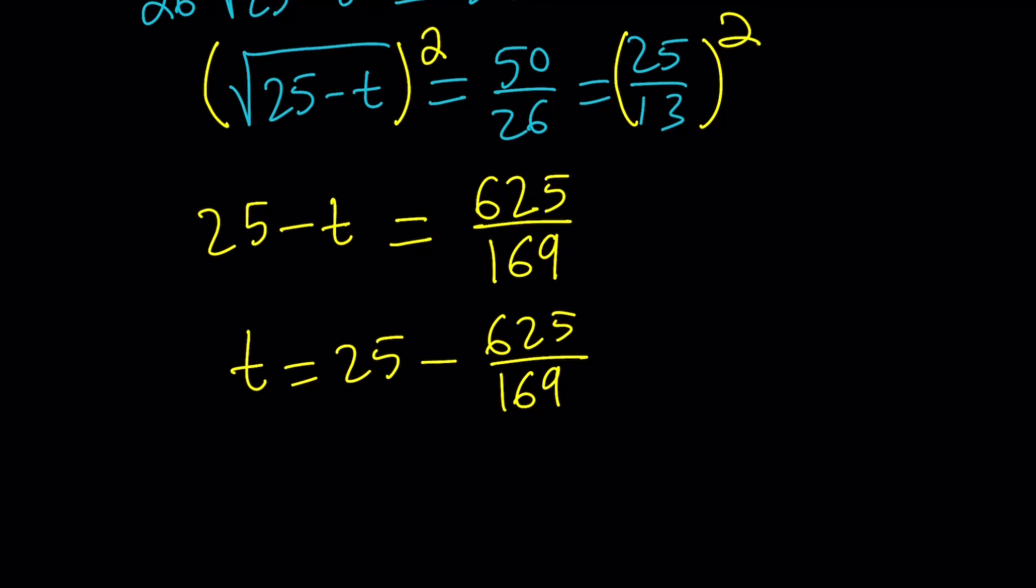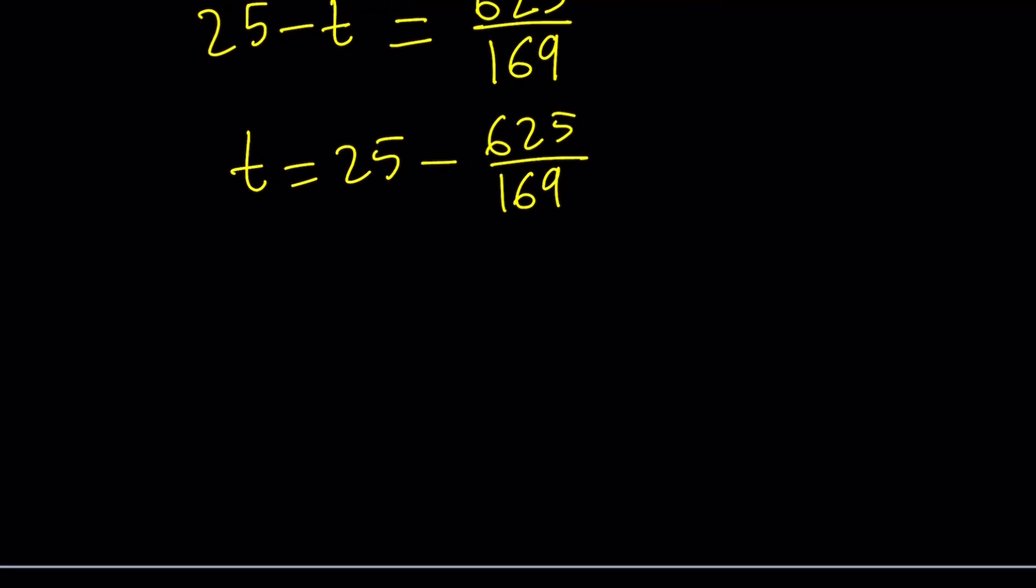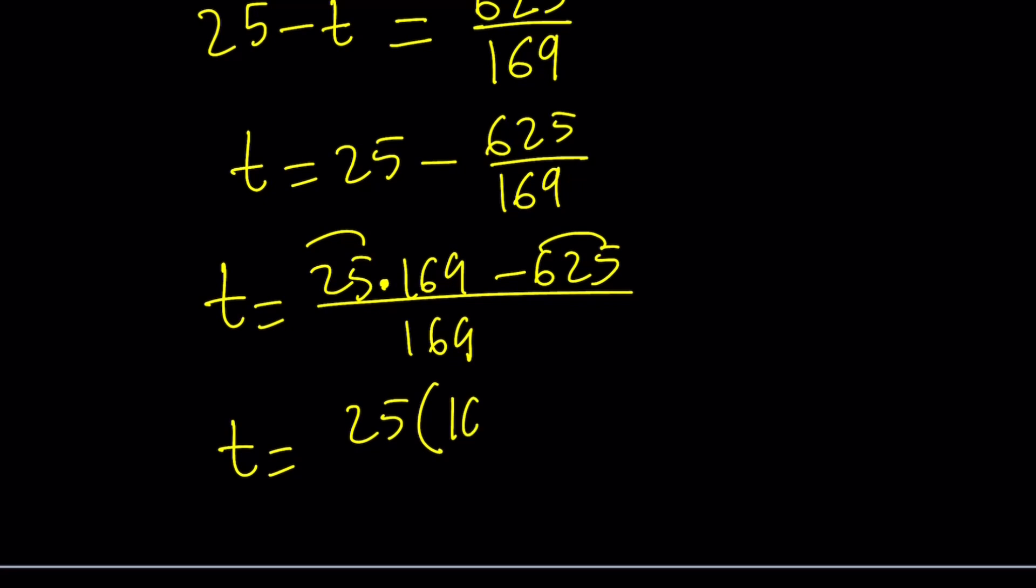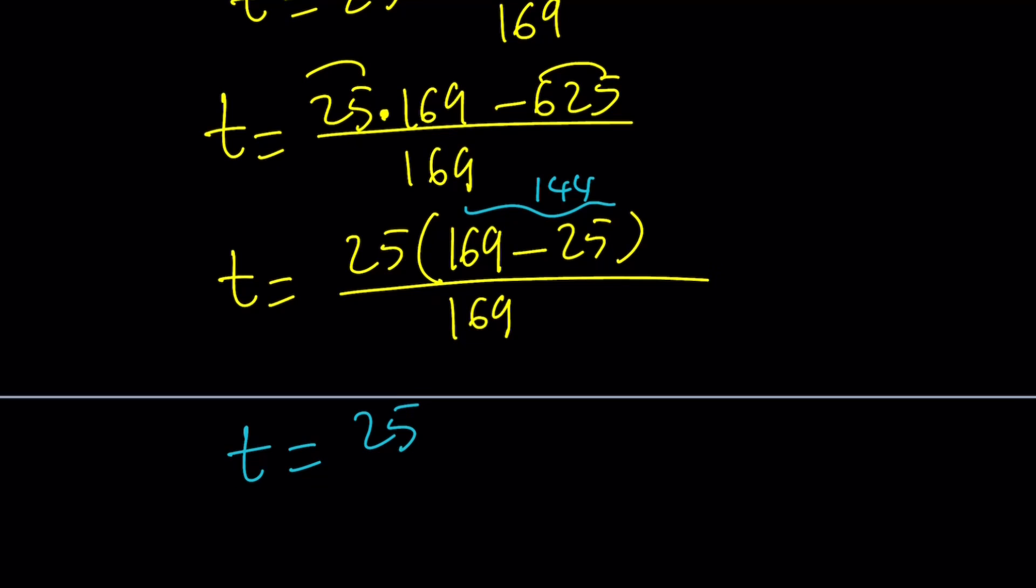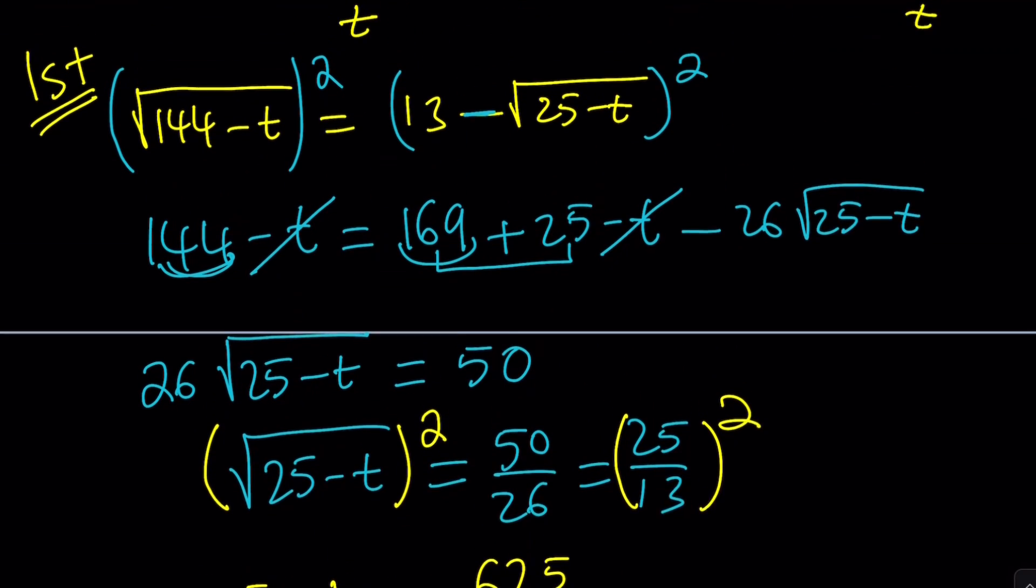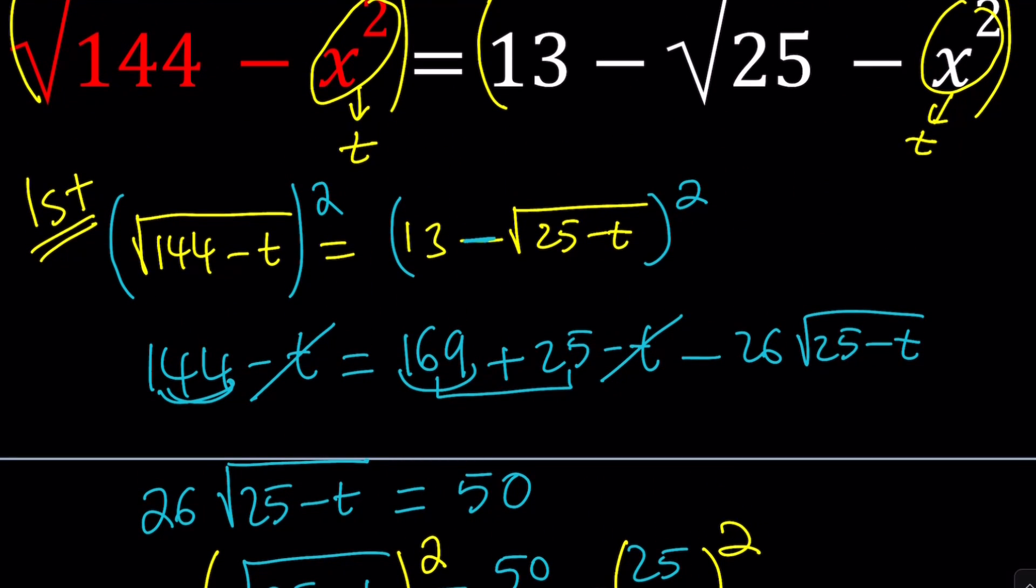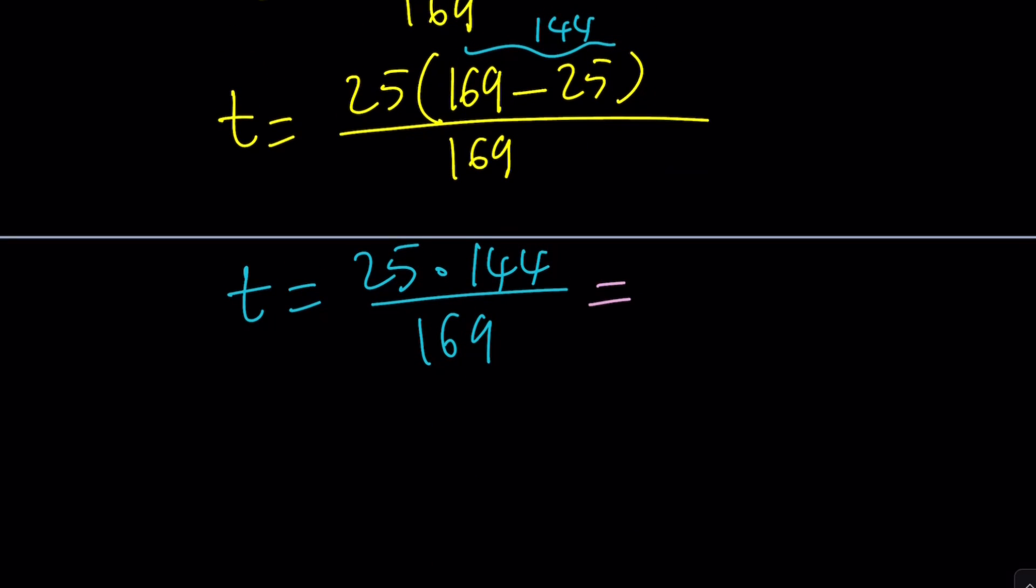Now we can square both sides one more time. That's what is done with radical equations, but we have to be careful because we might be introducing extraneous solutions. We also have to back substitute. Here we get 25 minus t equals, if you square that, 625 divided by 169. Let's switch these around. So t is going to be 25 minus 625 over 169.